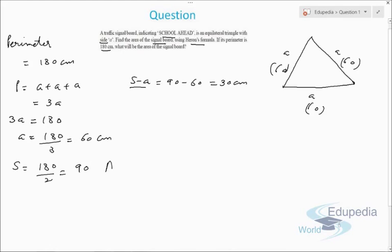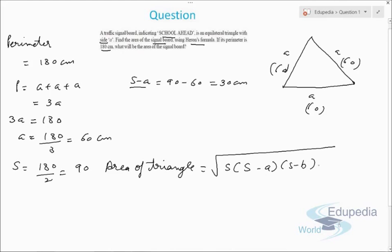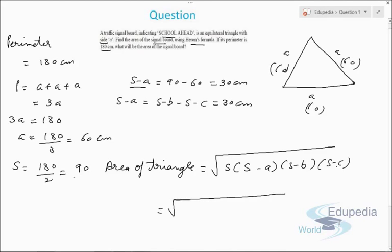Now, the area of the triangle according to Heron's formula is given by: Area = √(s × (s−a) × (s−b) × (s−c)). Here s−a, s−b, and s−c are all equal to 30 centimeters since each side is equal. So the area equals √(90 × 30 × 30 × 30).